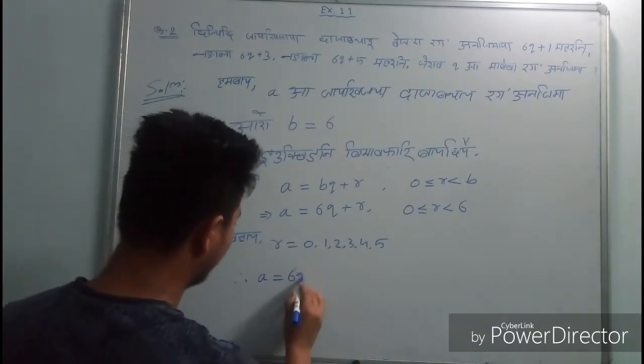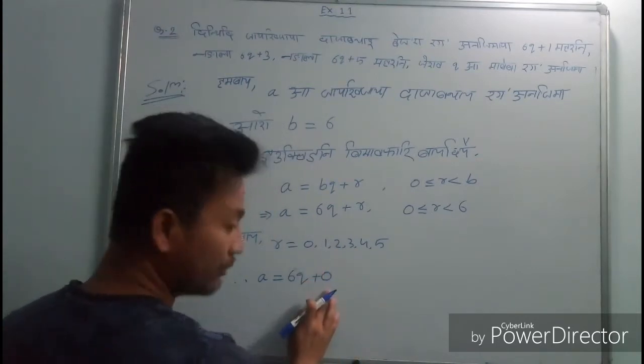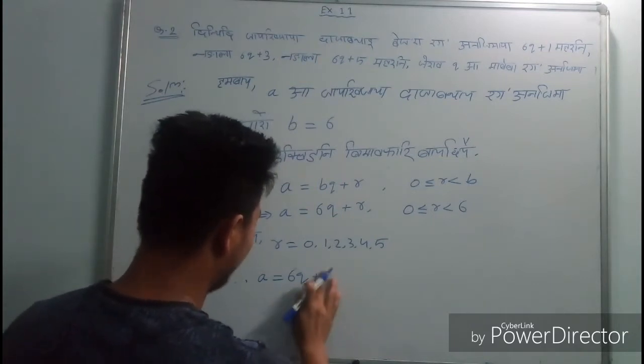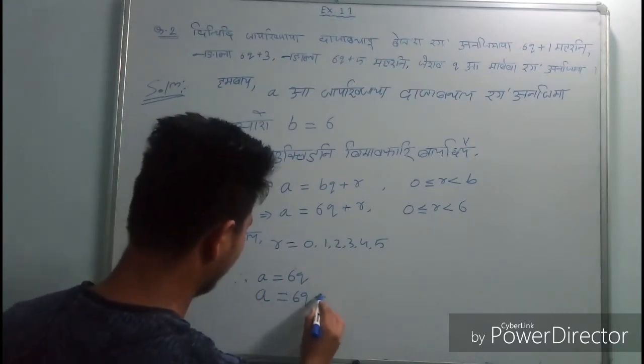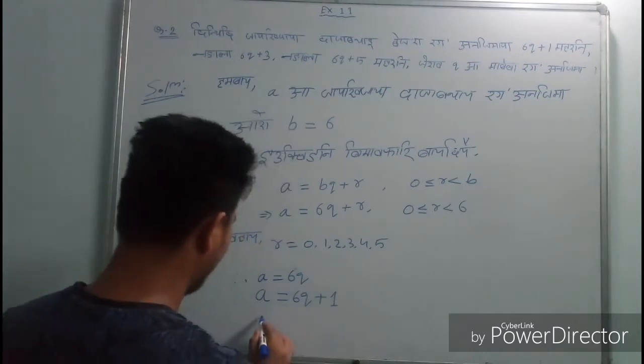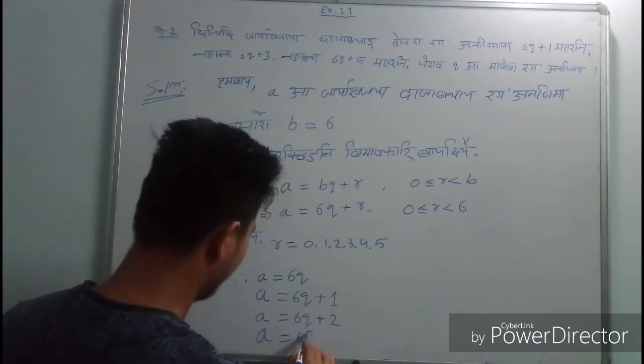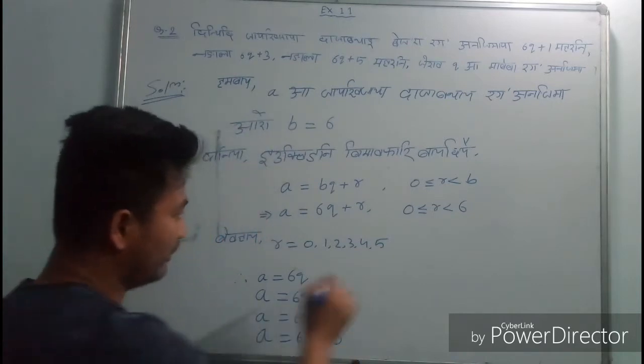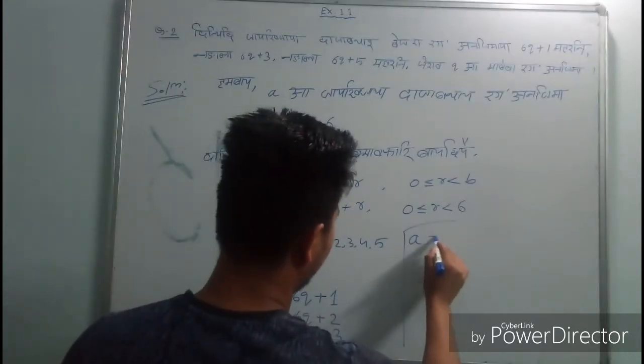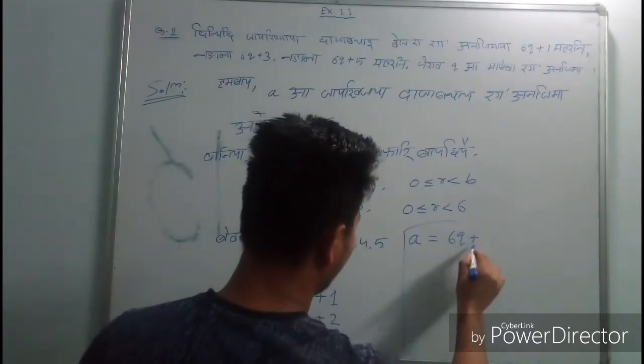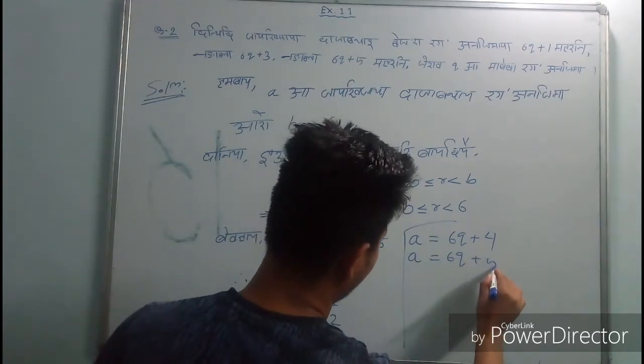So we have a equal to 6q, a equal to 6q plus 1, a equal to 6q plus 2, a equal to 6q plus 3, a equal to 6q plus 4, and a equal to 6q plus 5.